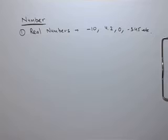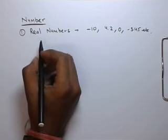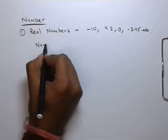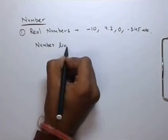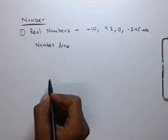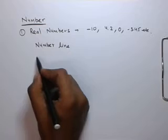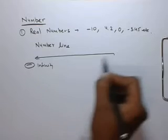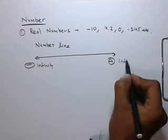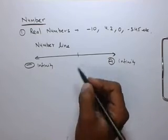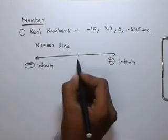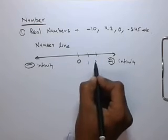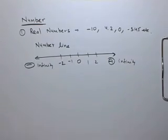We can understand the real numbers from the concept of number line also. Then what is number line? Number line is a line on which all the positive and negative numbers can be marked in a sequence, from negative infinity to positive infinity. All the real numbers can be identified on the number line like 0, 1, 2, minus 1, minus 2. So we can say all the numbers which can be represented on the number line are called real numbers.